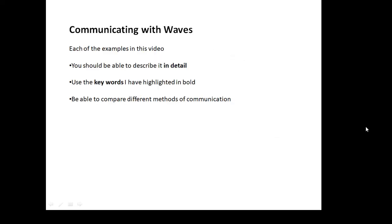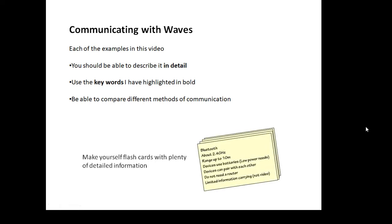There are lots of different examples of how we communicate with various types of the electromagnetic spectrum. For each of the examples in the video, you need to be able to describe it in detail, remember information to show you've actually learned it, and use keywords — I've highlighted some in bold. You need to know enough to compare them: advantages and disadvantages, or just the differences. I'd suggest making flashcards about each one, for example Bluetooth, and making an effort to learn this information. This is what gets marks — being able to regurgitate this information.